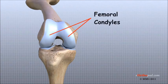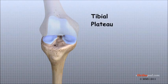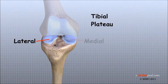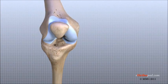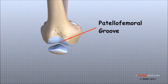Two round knobs called femoral condyles are found on the end of the femur. These condyles rest on the top surface of the tibia, called the tibial plateau. The outside half, farthest away from the other knee, is called the lateral tibial plateau, and the inside half, closest to the other knee, is called the medial tibial plateau. The patella glides through a special groove formed by the two femoral condyles, called the patellofemoral groove.